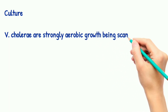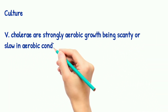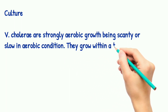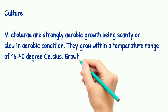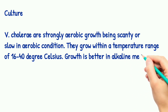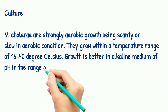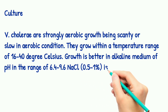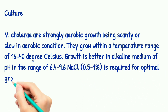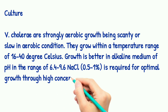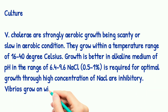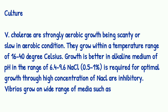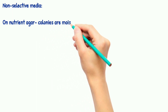They grow within a temperature range of 16 to 40 degrees Celsius. Growth is better in alkaline medium at a pH range of 6.4 to 9.6. NaCl at 0.5 to 1 percent is required for optimal growth, while high concentrations of NaCl are inhibitory. Vibrio cholerae grows on a wide range of media, including non-selective media such as nutrient agar.